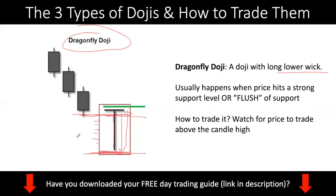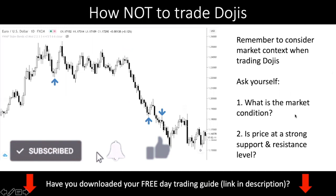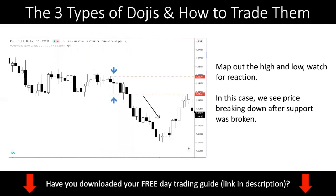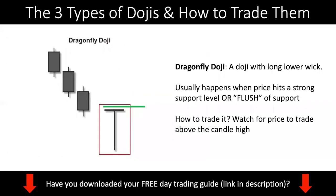How do you trade a dragonfly doji? It's very straightforward. You want to wait for price to trade above the candle high. You can use a buy stop order, which triggers your trade automatically when price breaks the high. I stress that you do not want to trade every single dragonfly doji — please use the two questions: ask yourself what's the market condition, then look for a key support and resistance level. For a dragonfly doji, you want to buy at a strong support in an uptrend.